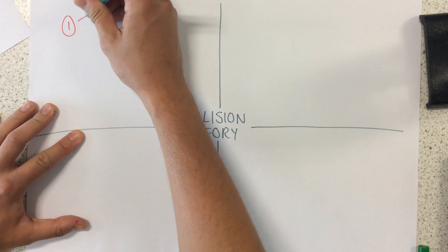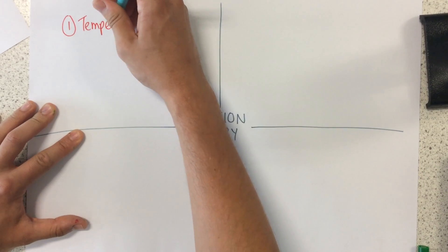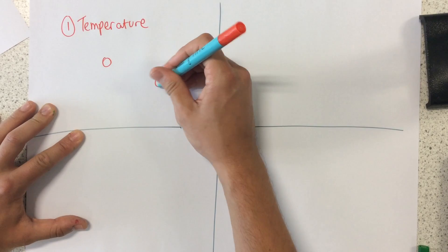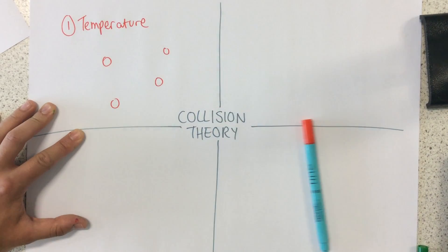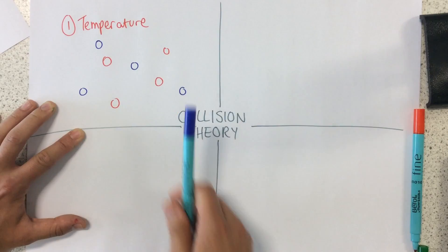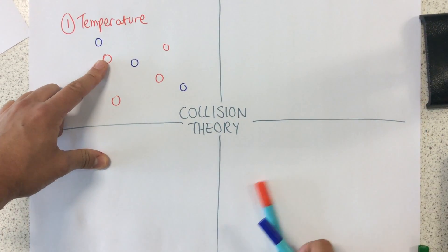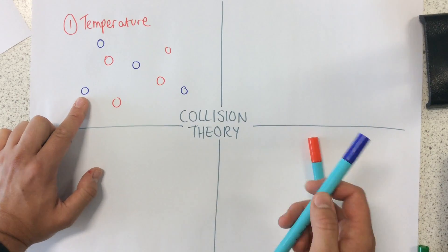Number one is temperature. Let's imagine we have these two different types of particle which need to react with each other. We're reacting the blue particles with the red ones here. Now, if it's really cold...